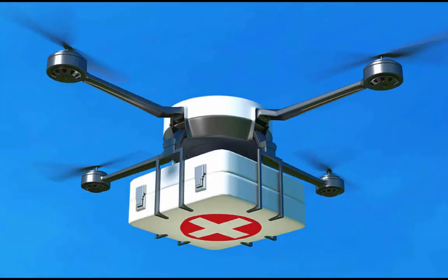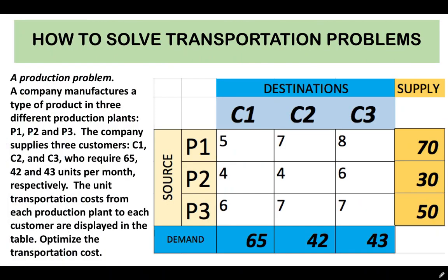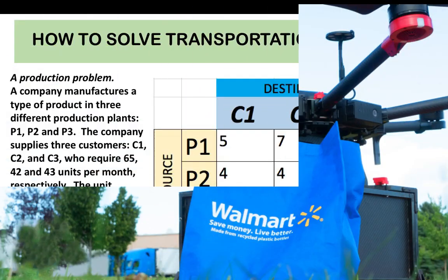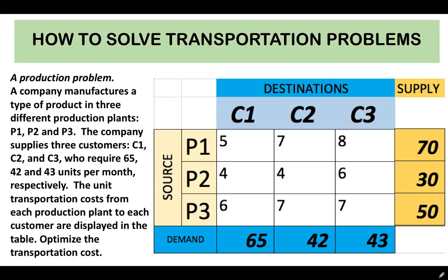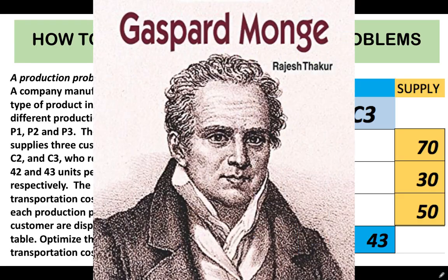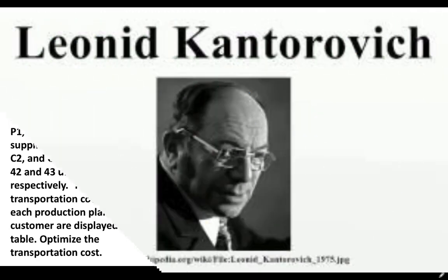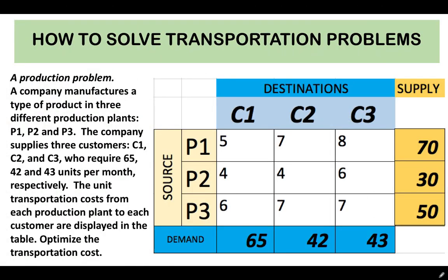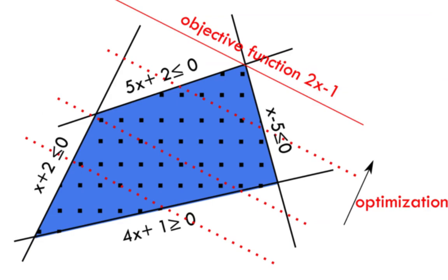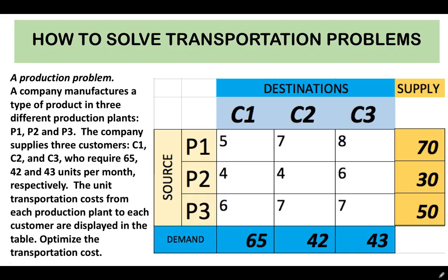In today's lesson, we are going to talk about how to solve transportation problems. But before that, a little background about transportation theory. In mathematics and economics, transportation theory is the study of optimal transportation and allocation of resources. The problem was formalized by the French mathematician Gaspard Monge in 1781. Major advances were made during World War II by Soviet mathematician and economist Leonid Kantorovich. Consequently, the problem is sometimes known as the Monge-Kantorovich transportation problem. The linear programming formulation is also known as the Hitchcock-Koopmans transportation problem.